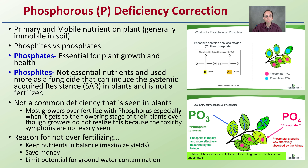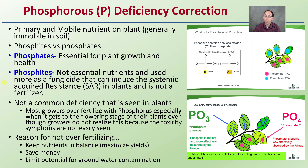To correct a phosphorus deficiency — it is a primary mobile nutrient but generally immobile in the soil. Phosphates are essential for plant growth; phosphites are not essential nutrients and are used more as a fungicide to induce systemic acquired resistance (SAR). Phosphorus deficiency is not common — most growers actually over-fertilize with phosphorus, especially at the flowering stage. Reasons not to over-fertilize include keeping other nutrients in balance, maximizing yields, saving money, and limiting potential groundwater contamination.